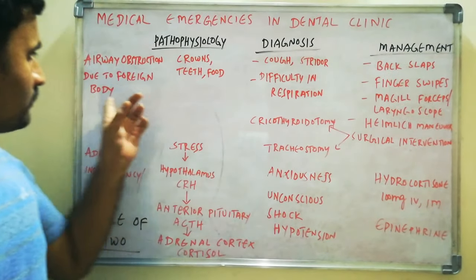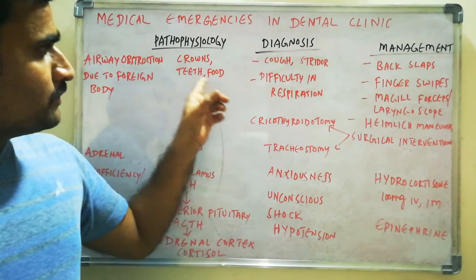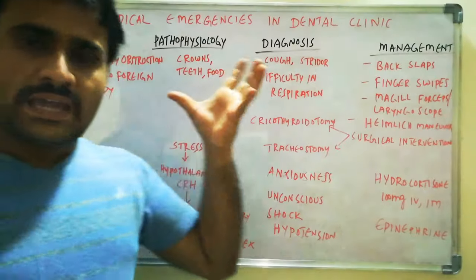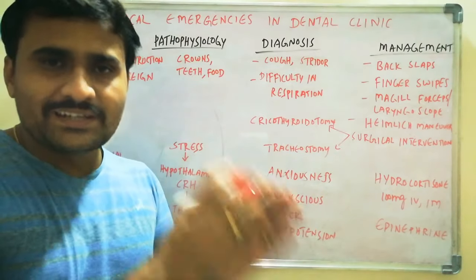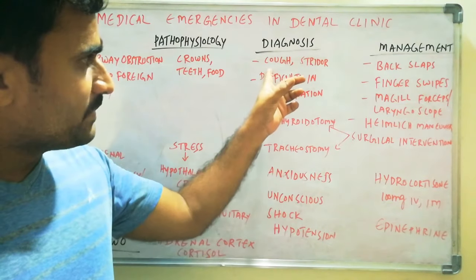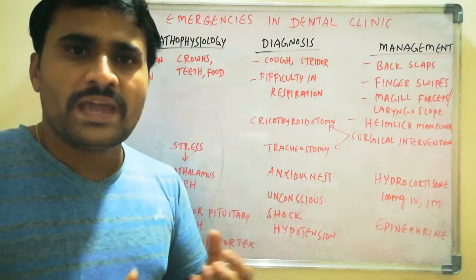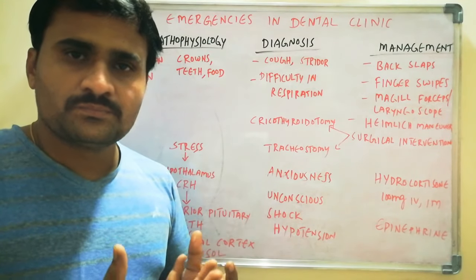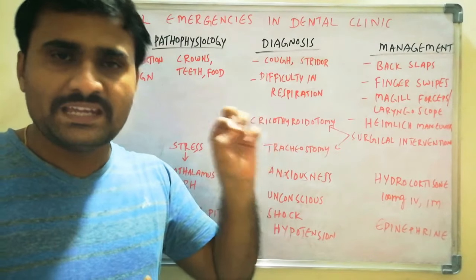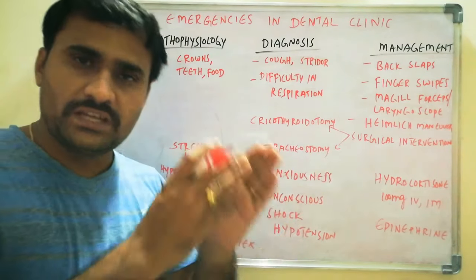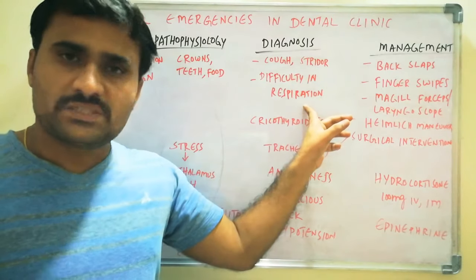Next is airway obstruction due to a foreign body — crowns, extracted teeth, or food objects. Upper airway obstruction produces more symptoms, while lower airway obstruction has fewer symptoms. Signs include weak ineffective cough as the body tries to expel the object, and stridor — a crowing sound — which is the most important feature of any airway obstruction, along with difficulty in breathing.